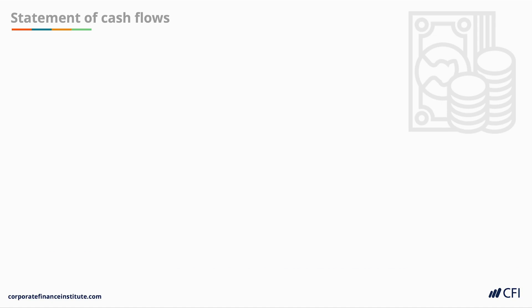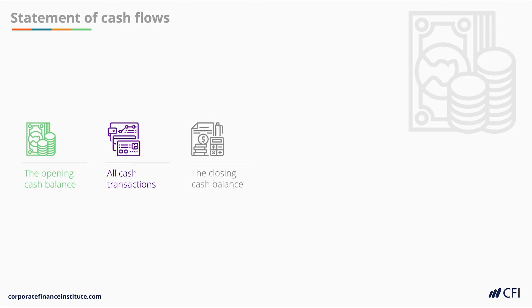The statement of cash flows acts as a kind of bank statement for a company. It shows the opening cash balance of the company and then lists all of the transactions affecting cash to arrive at the closing cash balance. The closing cash balance will match the balance reflected on the balance sheet.